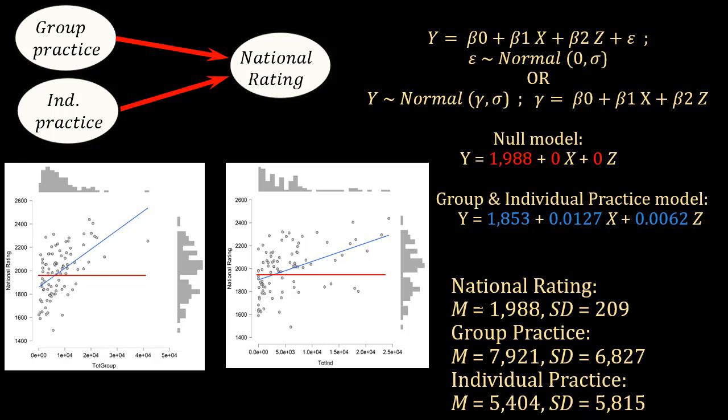We've got here the descriptives. In terms of national rating and group practice, they are the same. Now we added individual practice. In this sample, the participants practice 5,404 hours on average, and the standard deviation is also very large, 5,815 accumulated hours.